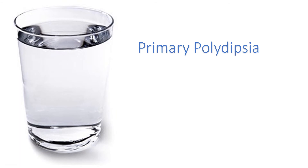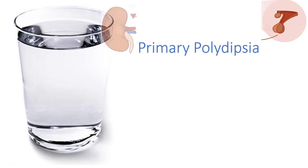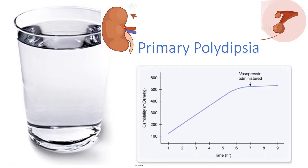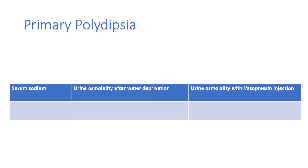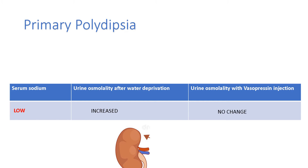In primary polydipsia, this person is perfectly normal — their pituitary is producing enough ADH and their kidney is responding normally. The real problem is they're just drinking a lot of water. So their water restriction response curve would be the same as a normal person. However, at baseline, because they are drinking so much water, their serum sodium would be low due to dilution. With water restriction, urine osmolality would increase, indicating a normal kidney response to sufficient ADH.